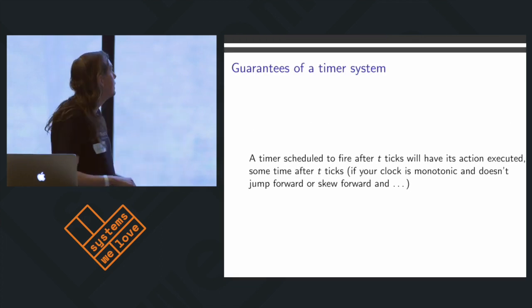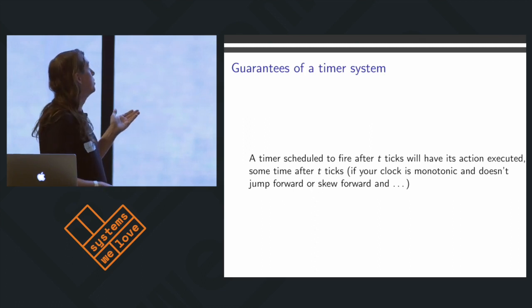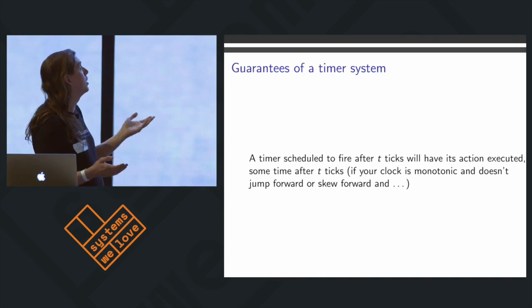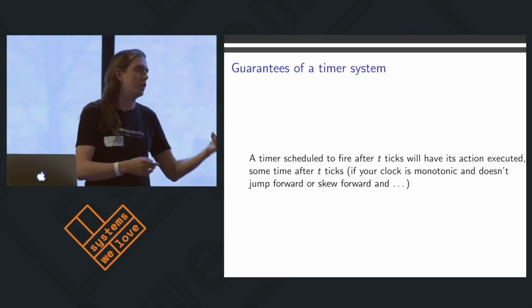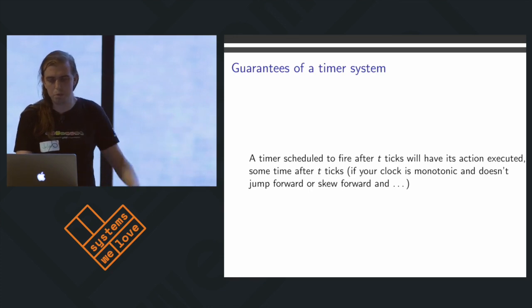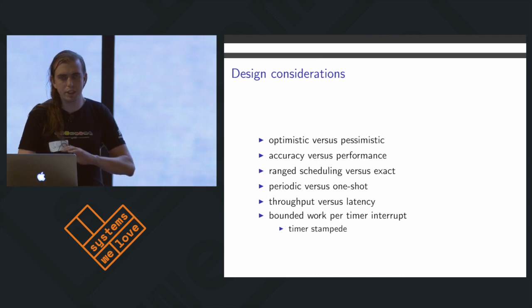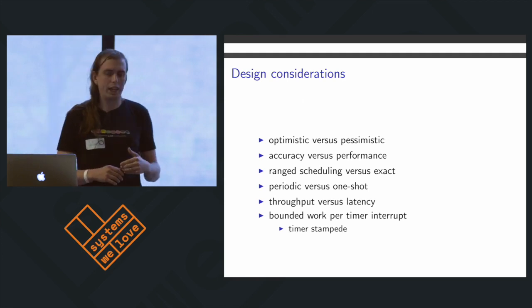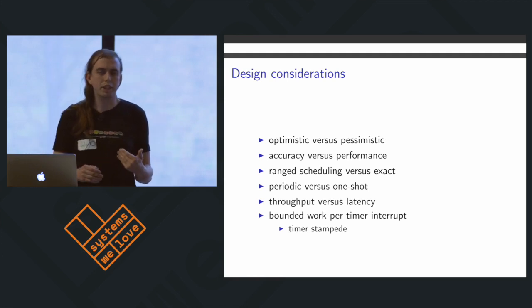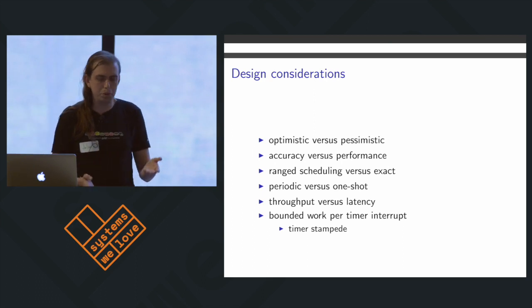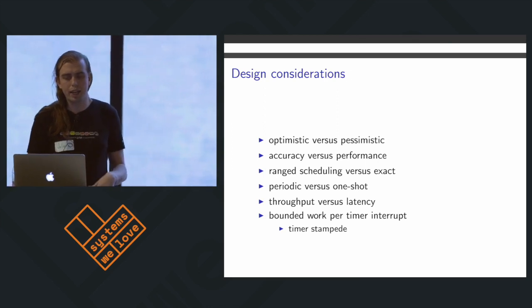I'll get out of the way the idea that basically there aren't a lot of guarantees from most timer systems. A timer scheduled to fire after t ticks will have its action executed sometime after t ticks, if your clock is well-behaved — and that I think should be a 'systems we love' talk on its own. But it's one of the reasons we can look at the design space and consider accuracy versus performance, because already we know that to some extent our timing system is inaccurate, and we have to decide where in that spectrum we want to be.